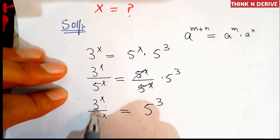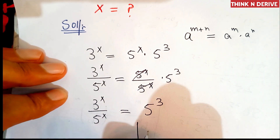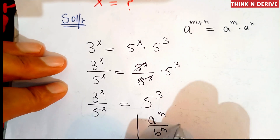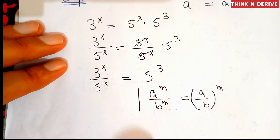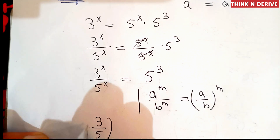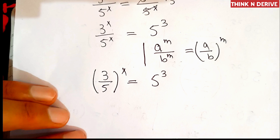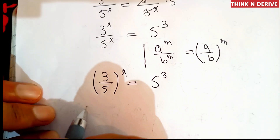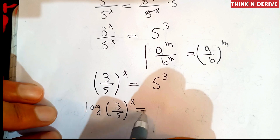Now we have different bases with the same powers, so we'll apply: a power m divided by b power m equals (a by b) power m. This gives (3 by 5) whole power x equal to 5 power 3. Now we'll apply log on both sides: log (3 by 5) power x equal to log 5 power 3.